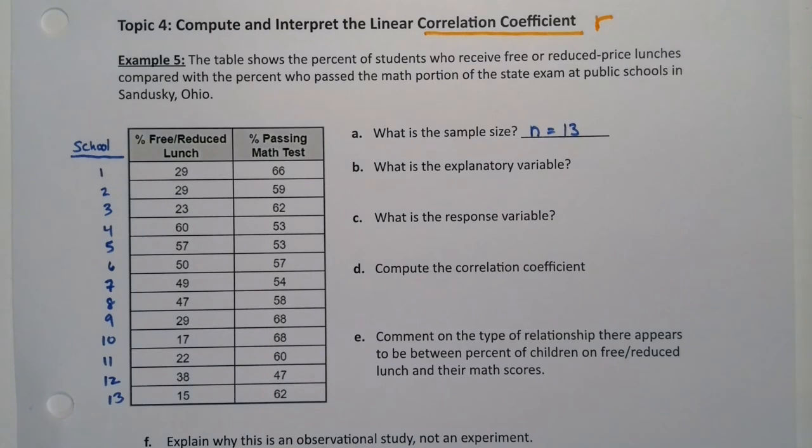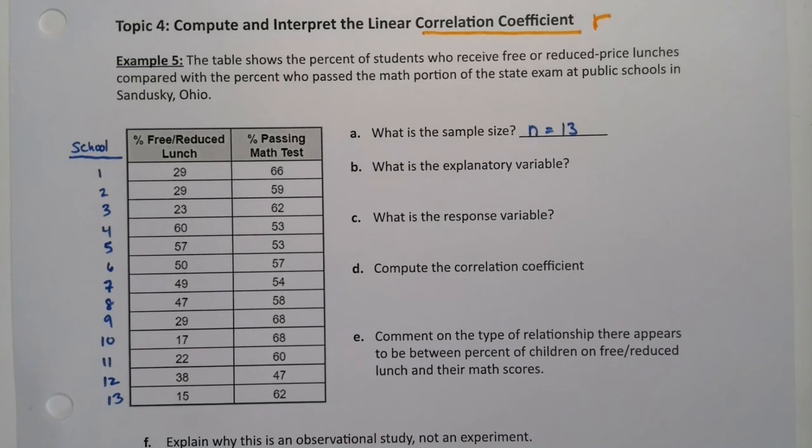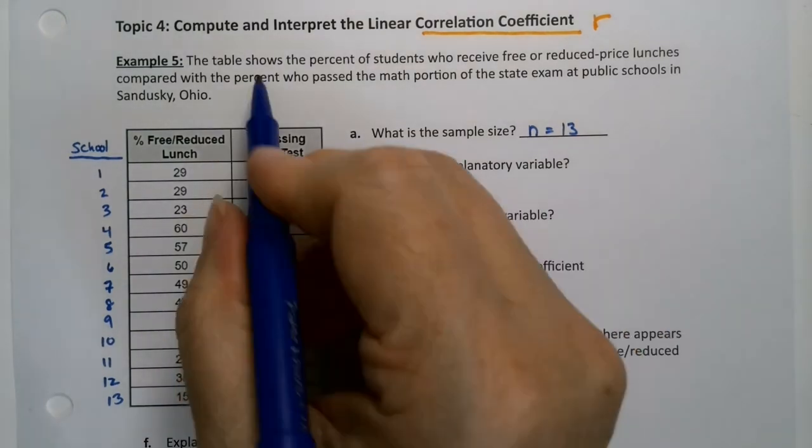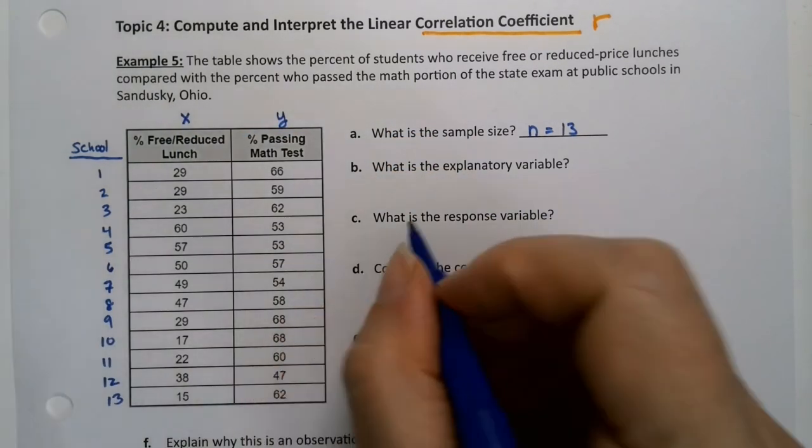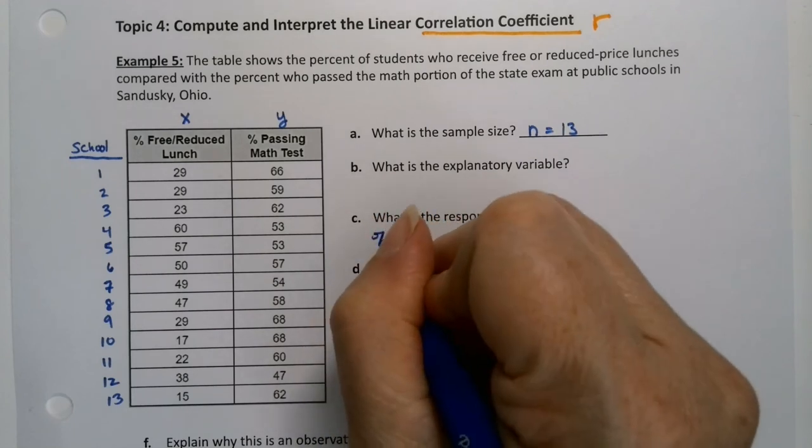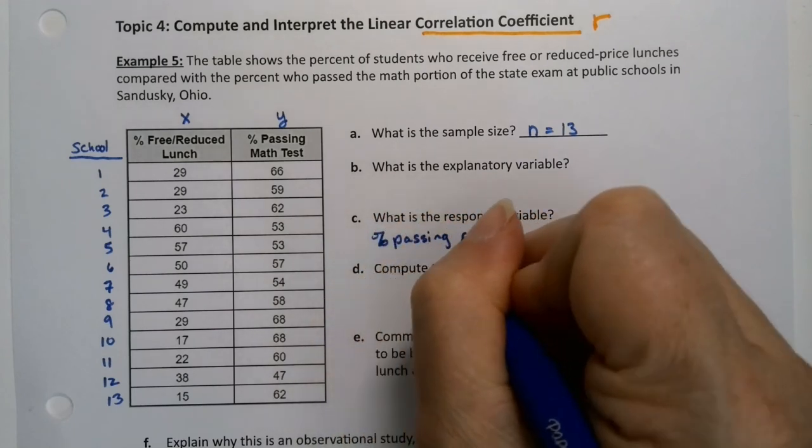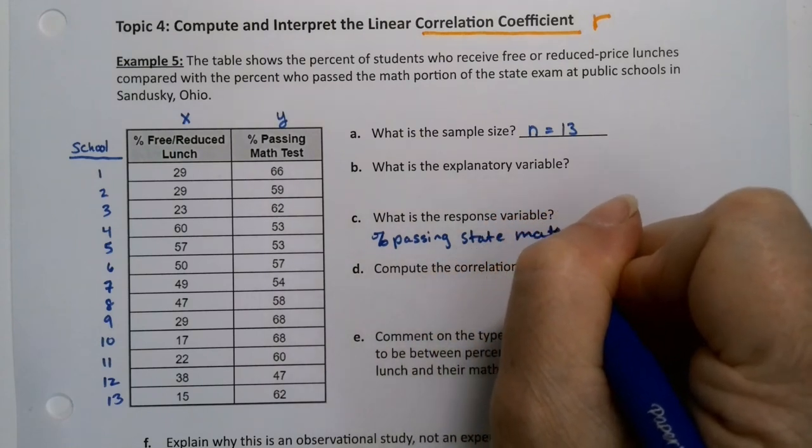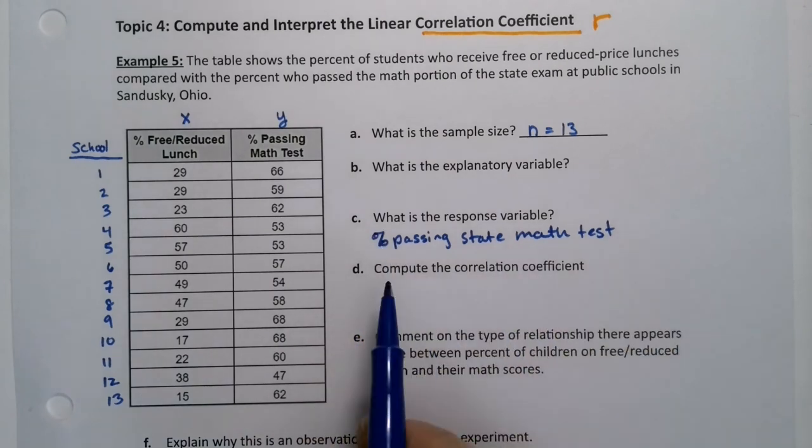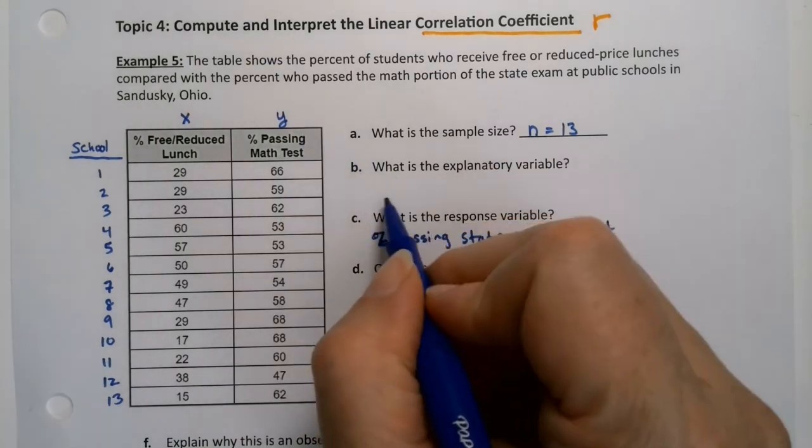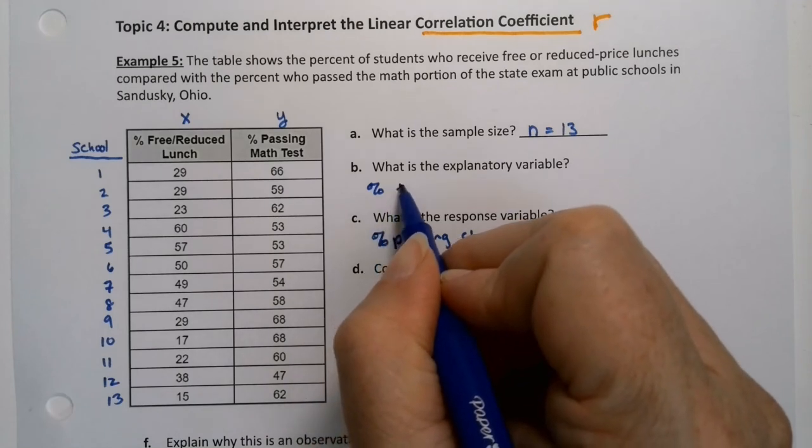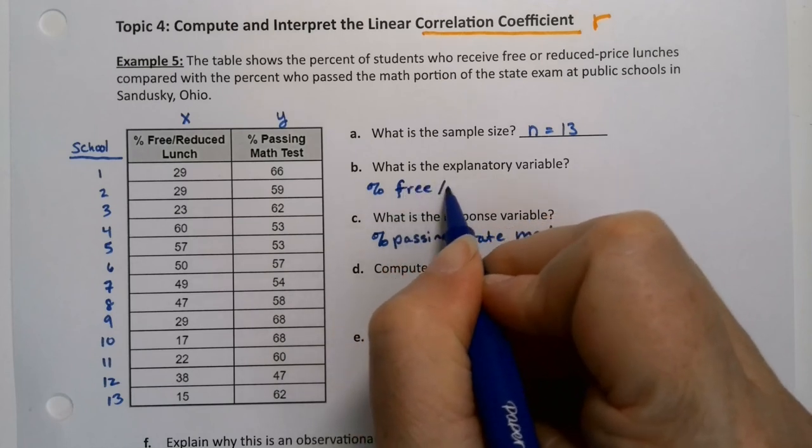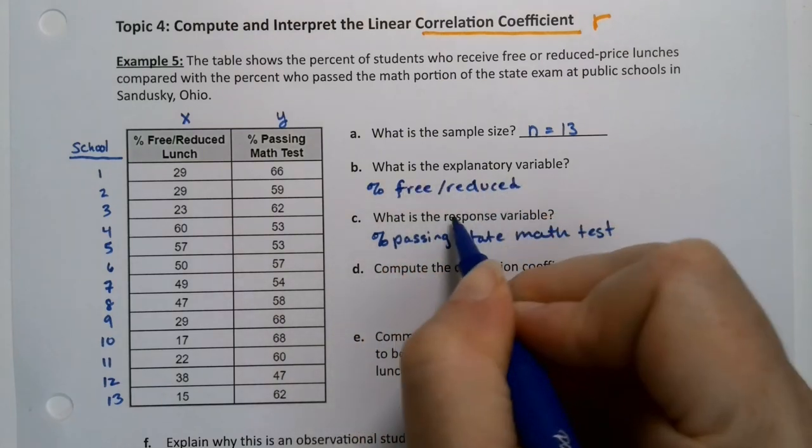Now, the explanatory variable and the response variable. You can imagine, what they want to know is what percentage of students are passing that math exam. That's what they really would like. So the response variable is right here, and the explanatory variable is right here. So in a way I'm kind of doing it backwards. The response variable is the most important part. So that's the percent passing the state math exam, and the percent of that school that passes the state math test. And then the explanatory variable would be the percent of that school that receive percent on free or reduced lunch.